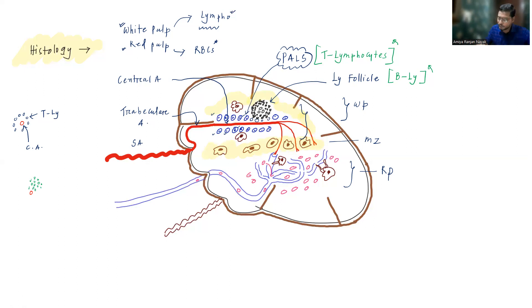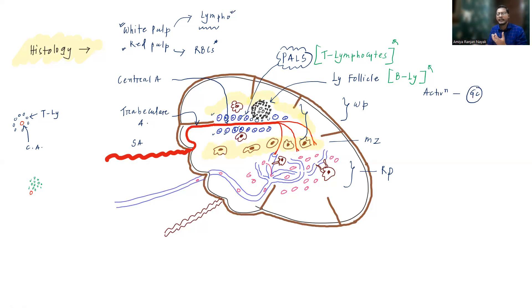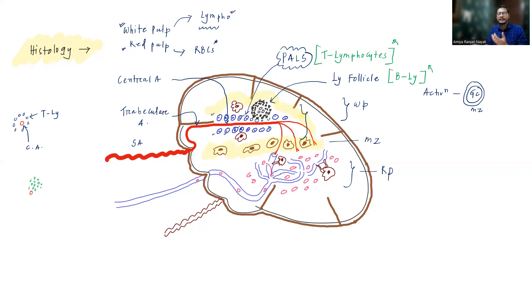When lymphoid follicles are activated, you can find the germinal center — the central part composed of activated B lymphocytes giving a pale appearance — surrounded by a darker mantle zone. In the spleen specifically, whenever lymphoid follicles are activated, along with the germinal center and mantle zone, you can also appreciate the marginal zone.